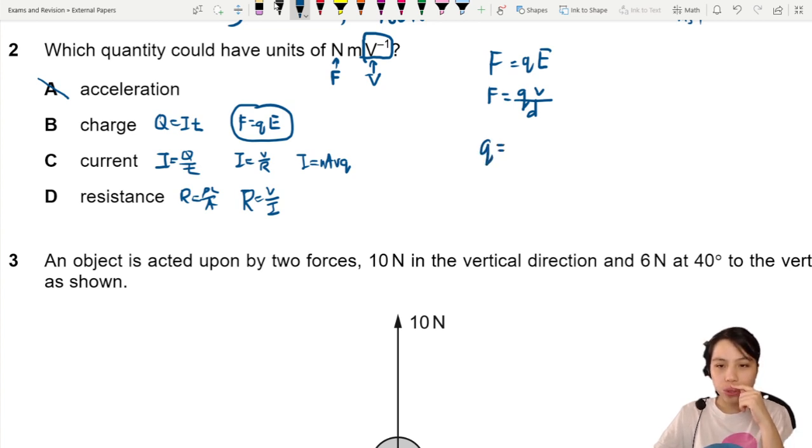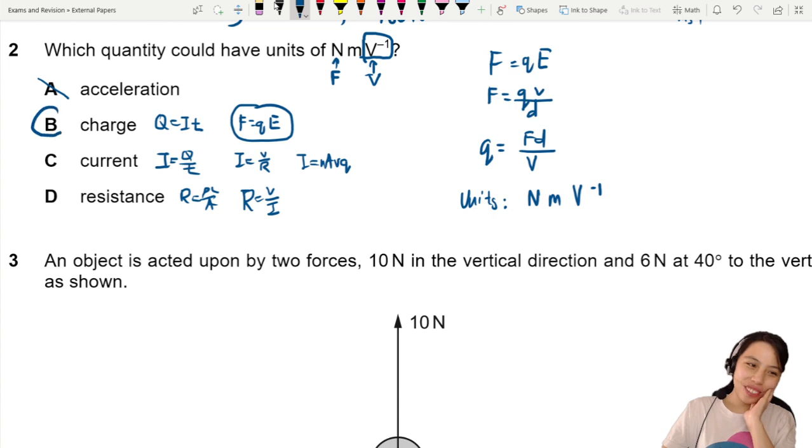So Q = FD/V. The units would then be force times distance times V^-1. Oh! That's the answer. So start off with equations, then use equations to help you substitute your base units and find the answer. That's all for this video.